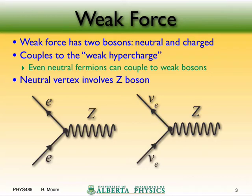We've got two bosons for the weak force: a neutral boson and a charged boson — the Z and the W. The weak force couples to something called weak hypercharge, and every fermion carries it. So a Z will couple to an electron, but it will also couple to an electron neutrino — something a photon will not do, since the neutrino is neutral. The Z does not couple to electric charge; it couples to weak hypercharge, and all known fermions carry this.